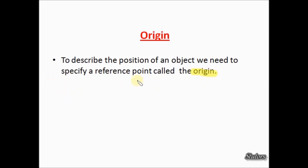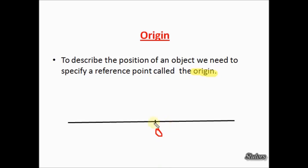The reference point, which is the origin, is any point or object in the surrounding which you use in order to specify or describe the position of another object. You use it as per your convenience — it may be anything. For example, when you draw a number line you take some point and mark it as zero, then with respect to this point you mark other points on both sides of the number line. Similarly, you use one specific point or object to describe the position of other objects — this is called an origin.